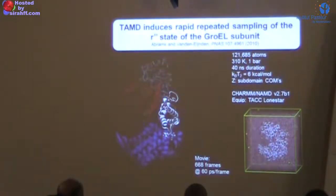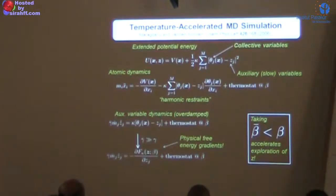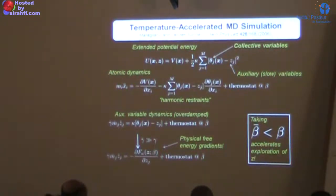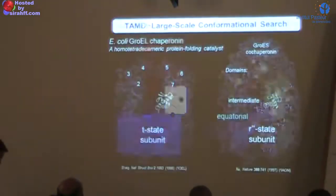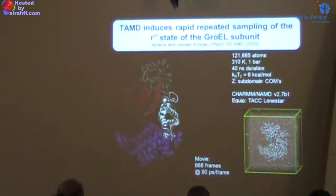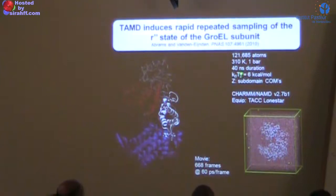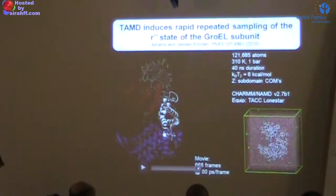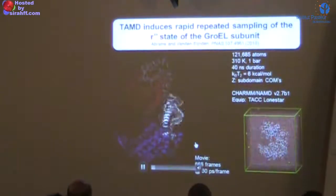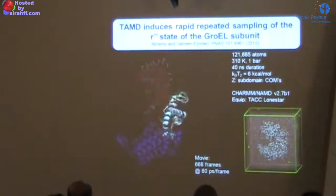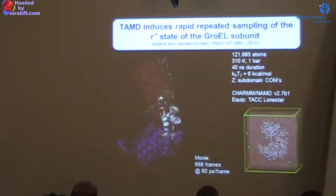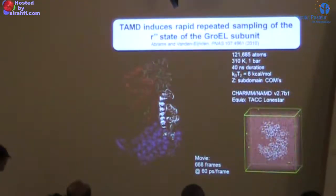Running TAMD simulations where the vector of collective variables is the x, y, z coordinate of each subdomain center — 27 CVs total — on a fully atomistic explicit-solvent system, we observe the following. At 6 kcal/mol acceleration, a 40-nanosecond simulation starting from the T-state spontaneously visits conformations very close to the R″ state, shown here for reference as the gray static representation. A few times it gets very close to overlapping that reference structure.